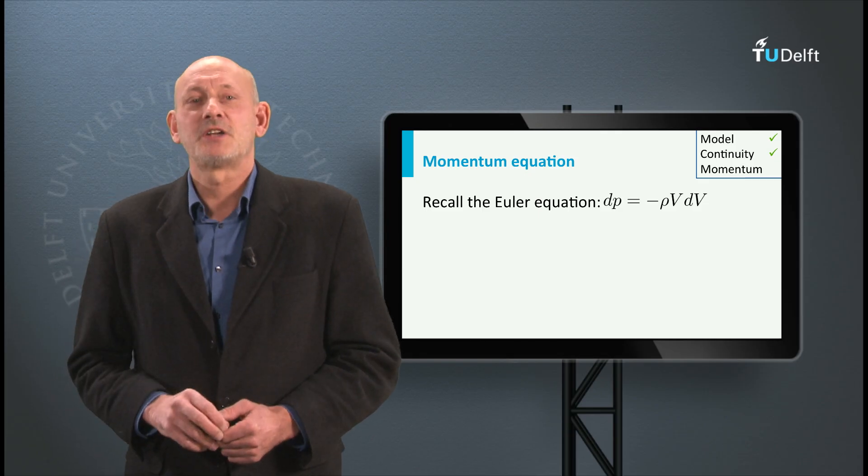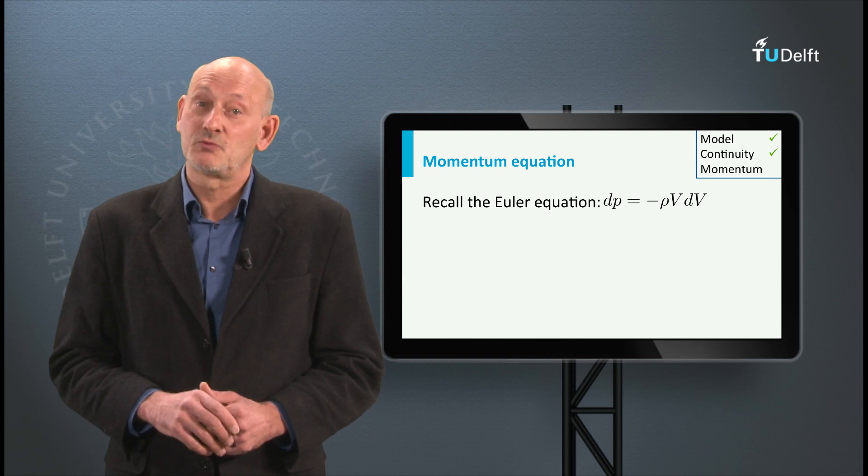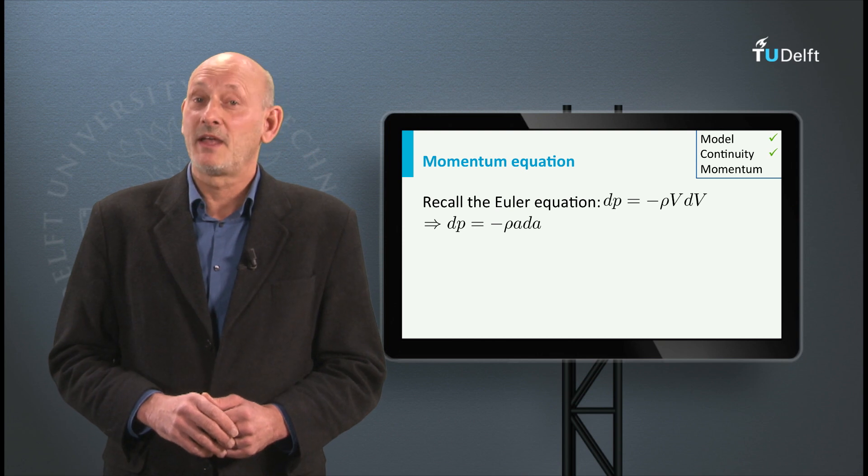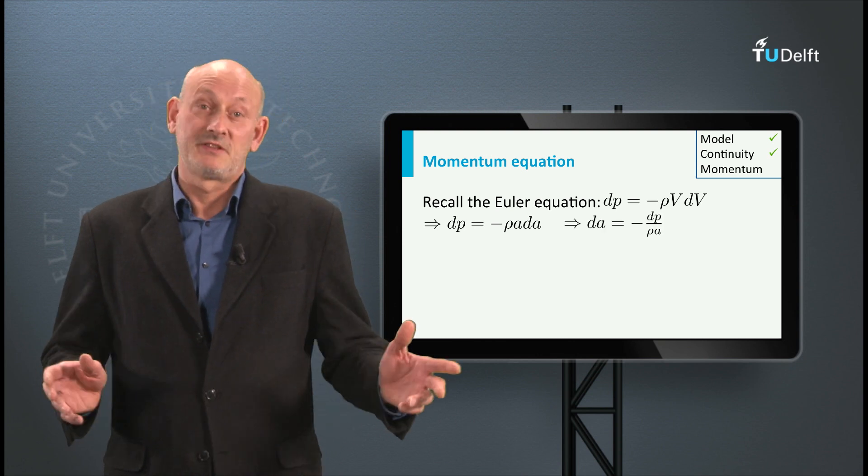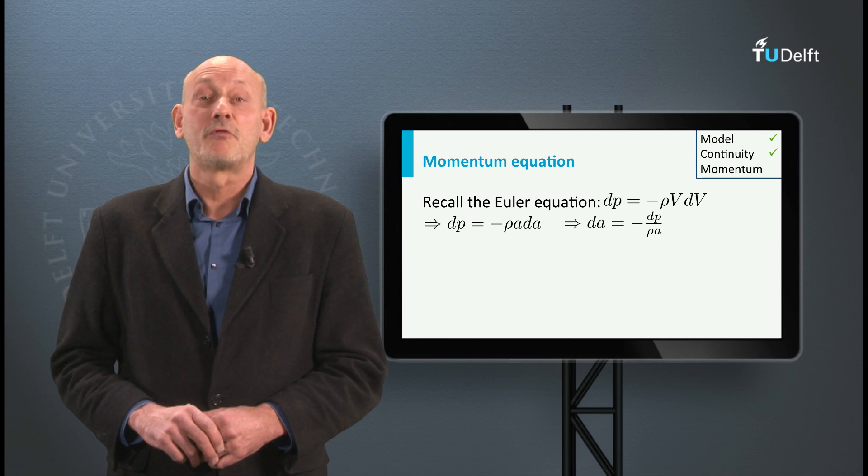Written in the notation of the present situation, where V is equal to the speed of the sound wave A, we find dP is minus rho A dA or, written a little differently, dA is minus dP over rho A.